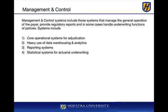In the management and control section, the focus is core operation for claims adjudication — that is, payment or denial of claims. There is heavy use of data warehousing and analytics, as all systems are collecting data based on subscribers and providers. Significant reporting systems produce reports for explanation of benefits as well as reports to the Department of Insurance. Statistical systems such as SAS or SPSS are used for actuarial underwriting — complex algorithms that determine whether policies should be issued and at what price.